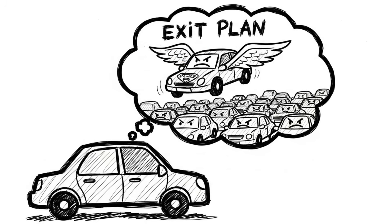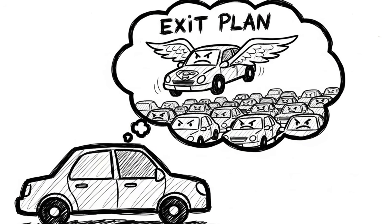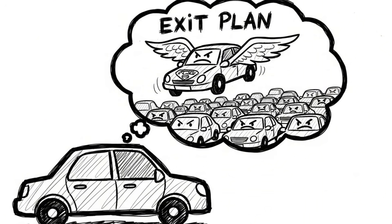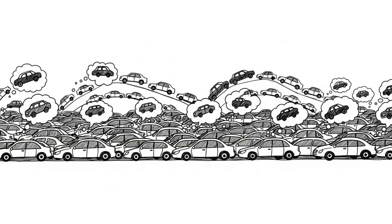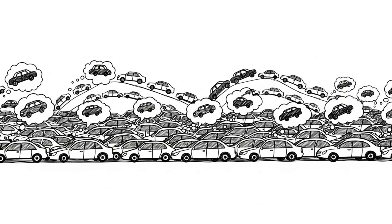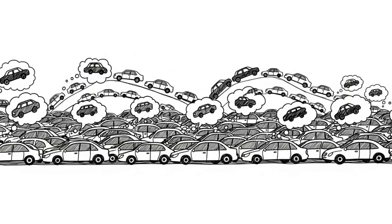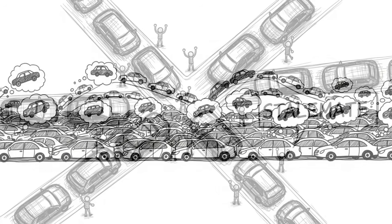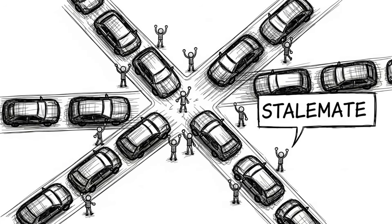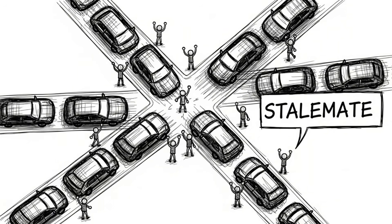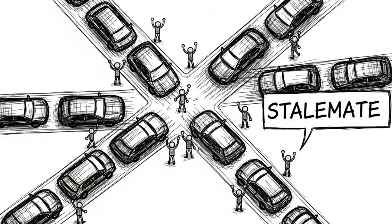Every other driver is thinking the exact same thing. If you move, you slow down that lane. If they move, they slow down yours. Eventually, everyone settles into a lane, and even though the traffic is terrible and everyone is miserable, no single person can improve their travel time by switching lanes unilaterally. You have entered a Nash Equilibrium.